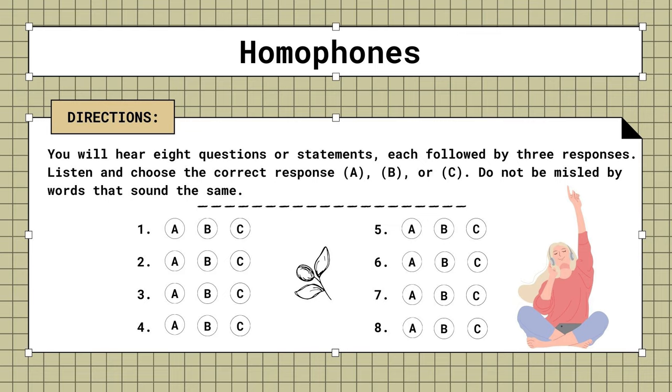2. Mr. Chang doesn't eat meat. A. Then we'll have sushi. B. Why can't he meet us? C. Is 5 o'clock okay?